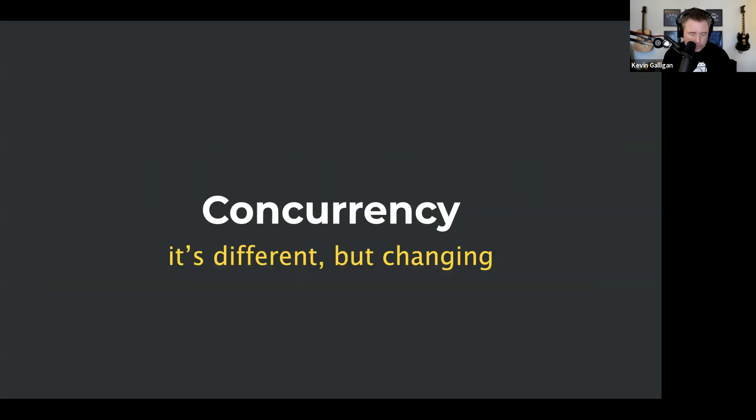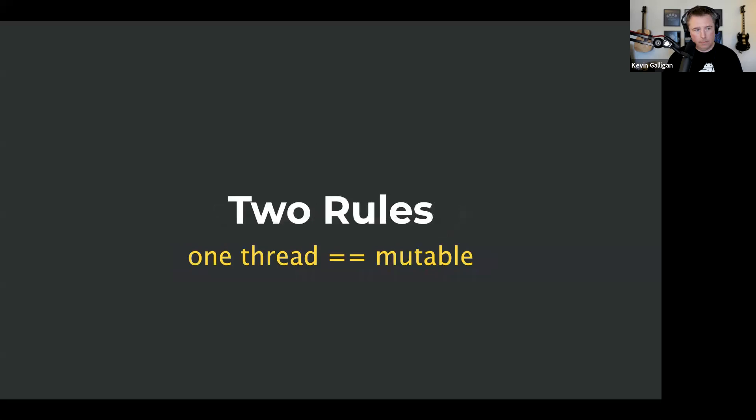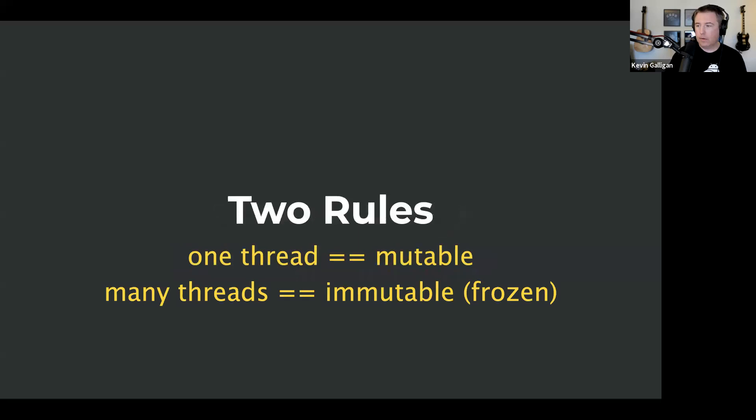Concurrency: if you've been paying attention to Kotlin Multi-Platform, you'll know that Kotlin native has a weird concurrency model. I've been obsessing about this for years. Briefly, two rules: one thread can have mutable state, and multiple threads cannot — it's immutable/frozen.